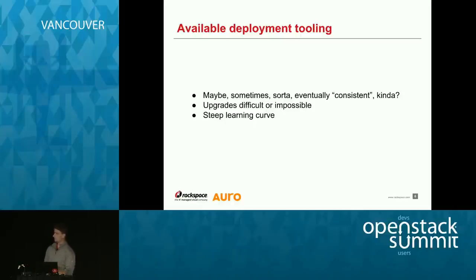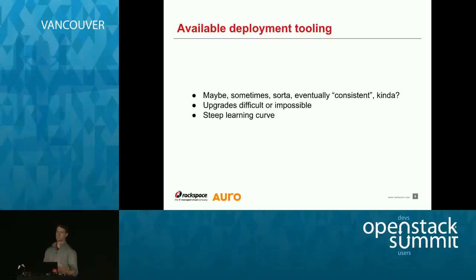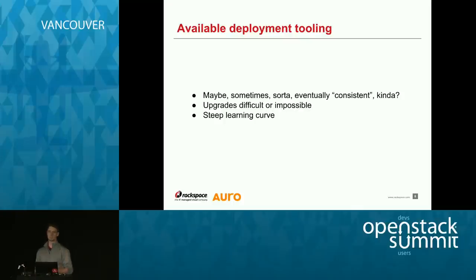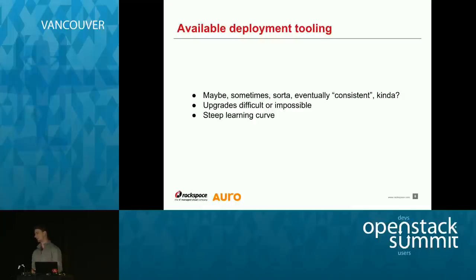Upgrades also became very difficult in that eventually-consistent model. You would pull down new playbooks and they would run something that was supposed to run on the first deployment, but you're not anticipating it running again. An upgrade comes through and destroys a bunch of stuff, and you have to unwind it. Even rolling upgrades — going from one version of Havana to another — were unacceptable.